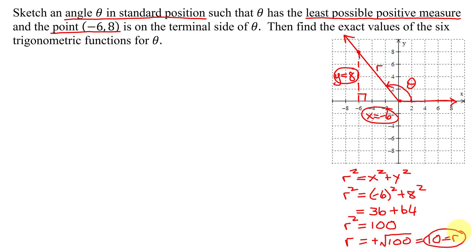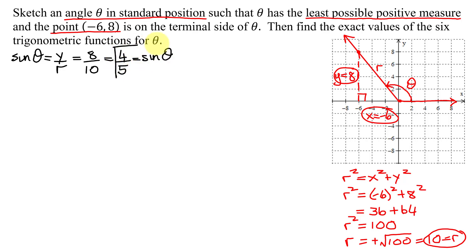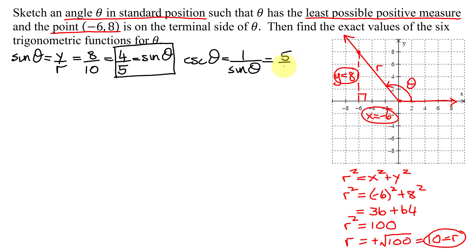I can find the exact values of all six trig functions. Starting with the sine of theta, defined as y over r: y is 8, r is 10. Both reduce by 2, so sine of theta equals 4 fifths. The reciprocal function of sine is cosecant, so the cosecant of theta is the reciprocal of 4 fifths, which is 5 fourths.